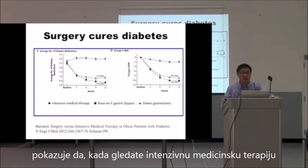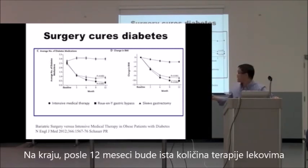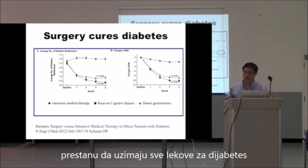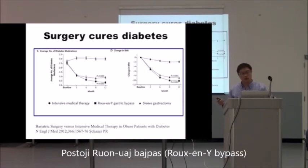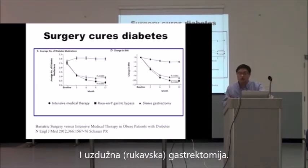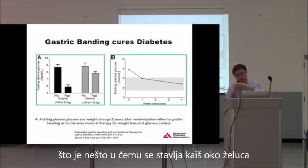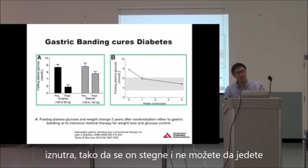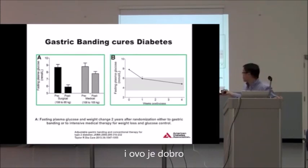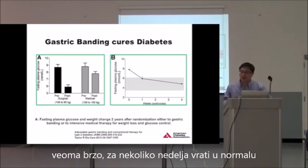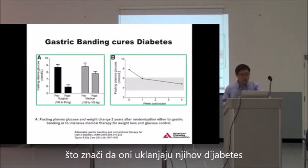A study published in the New England Journal of Medicine shows that with intensive medical therapy, patients are on essentially as much medication as before at 12 months. But with bariatric surgery — both Roux-en-Y bypass and sleeve gastrectomy — patients very quickly come off all their diabetic medications. Even gastric banding, where a belt is placed around the stomach on the inside, performs very well. Weight comes down, and blood glucose very quickly returns to normal over a matter of weeks — reversing their diabetes.